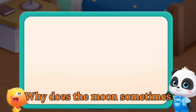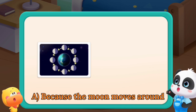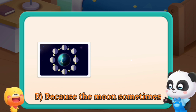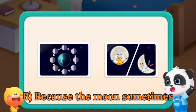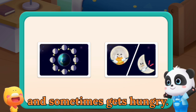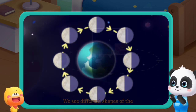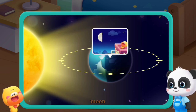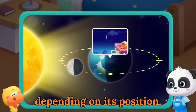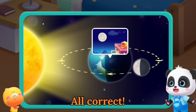Why does the moon sometimes appear round and sometimes appear curved? A: Because the moon moves around the earth. B: Because the moon sometimes gets very full and sometimes gets hungry. Correct answer — we see different shapes of the moon depending on its position. That's right, all correct!